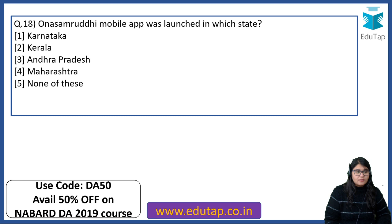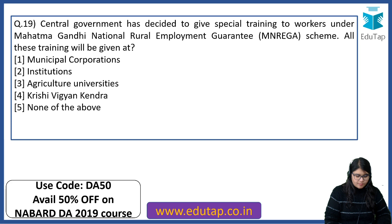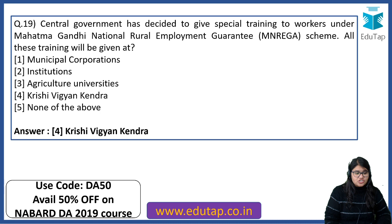The Ona Samrudhi mobile app — in which state was it launched? Even state-related initiatives, portals or apps can be asked in your paper. The right answer is Kerala. The central government has decided to give special training to workers under Mahatma Gandhi National Rural Employment Guarantee Act. Where will this training be provided? The right answer is Krishi Vigyan Kendra.